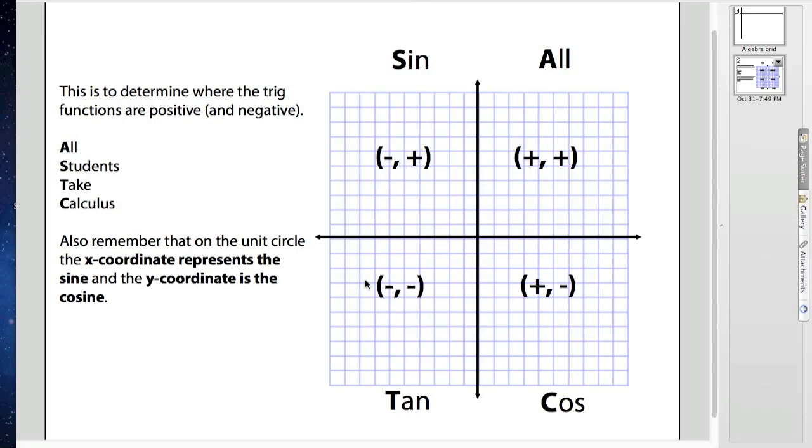In the third quadrant, you have negative, negative. That means that everything is negative. The x is negative, the y is negative. But when I combine them for tangent, they become positive.